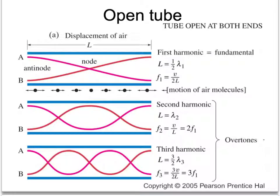Any item with harmonics can be modeled as a tube open at both ends or a tube open at only one end. We'll talk about the mathematics behind each of those situations. In the case of the tube open at both ends, the air in the tube is free to vibrate at its maximum at the open ends. A place where vibration is at its maximum is an anti-node, so you have an anti-node at both ends.